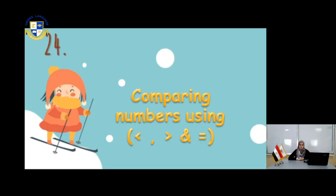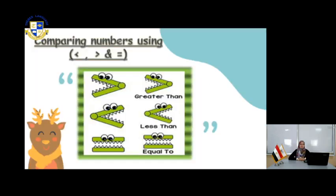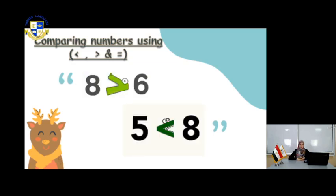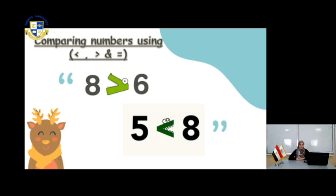We will compare numbers in this page using another way — also greater than, smaller than, and equal. You see the alligator. The alligator always opens its mouth for the greater number. Comparing 8 and 6 — which is greater, 8 or 6? It's 8. So the alligator will open for 8. For 5 and 8 — 8 is greater, so the alligator opens for the 8.